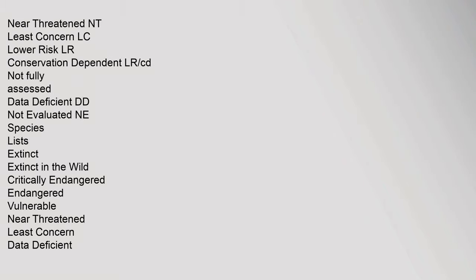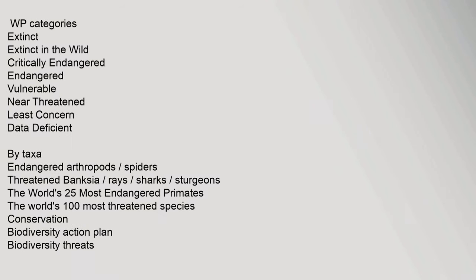Near Threatened (NT), Least Concern (LC), Lower Risk (LR), Conservation Dependent (LR), Not Fully Assessed, Data Deficient (DD), Not Evaluated. Species Lists: Extinct, Extinct in the Wild, Critically Endangered, Endangered, Vulnerable, Near Threatened, Least Concern, Data Deficient. WP Categories: Extinct, Extinct in the Wild, Critically Endangered, Endangered, Vulnerable, Near Threatened, Least Concern, Data Deficient, Bitaxa Endangered Arthropods.